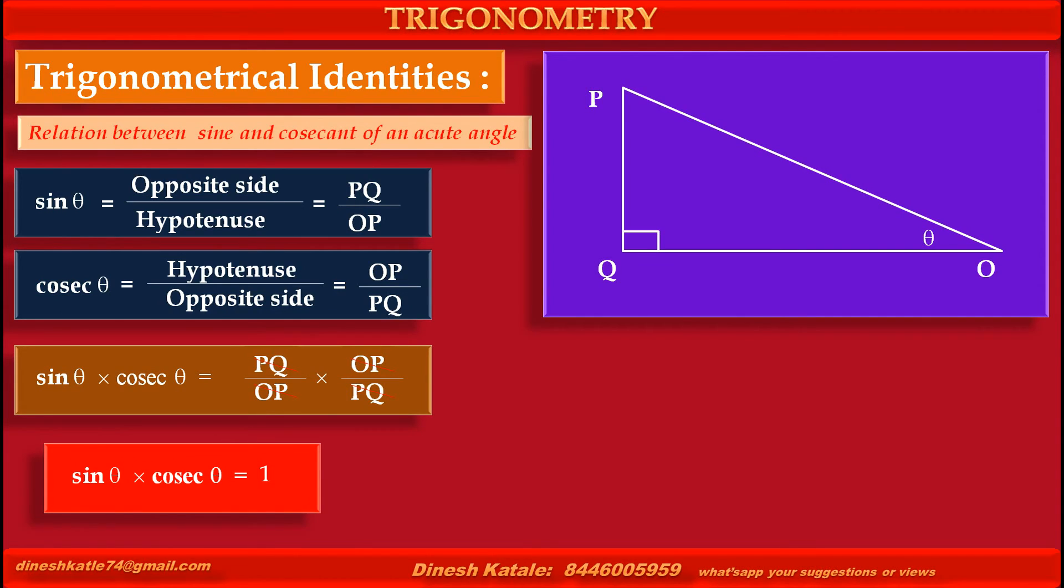We get sine theta into cosec theta is equal to 1. Also, we get sine theta is equal to 1 upon cosec theta. Or we can write, cosec theta is equal to 1 upon sine theta.